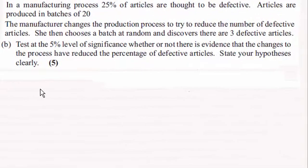Hi there. Now for this question, just to recap, we were told that in a manufacturing process 25% of articles are thought to be defective. Articles are produced in batches of 20 and the manufacturer changes the production process to try to reduce the number of defective articles. She then chooses a batch at random and discovers there are three defective articles. We're asked to test at the 5% level of significance whether or not there is evidence that the changes to the process have reduced the percentage of defective articles. State your hypothesis clearly.